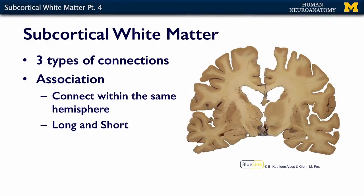The third type of fibers I want to talk about are the association fibers. Remember that the commissural fibers, which we can see in the corpus callosum, connect the hemispheres. The projection fibers leave the hemispheres and go to lower centers. The association fibers connect areas of the brain to other areas of the brain, but they stay on the same side.